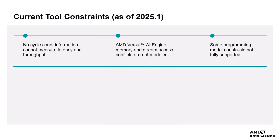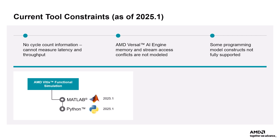Some limitations of AMD Vitis functional simulation are as follows. It cannot provide any information on the cycle count, making it impossible to measure latency and throughput. AI engine memory and stream access conflicts are not modeled through this simulation, so it is not possible to debug these memory conflict issues. Certain programming model constructs are not fully supported currently, and it does not provide support for the C++ framework yet. Vitis functional simulation is provided with support for MATLAB and Python frameworks with the 2025.1 version tool release.